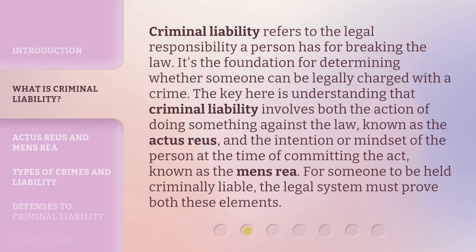Criminal liability refers to the legal responsibility a person has for breaking the law. It's the foundation for determining whether someone can be legally charged with a crime. The key here is understanding that criminal liability involves both the action of doing something against the law, known as the actus reus, and the intention or mindset of the person at the time of committing the act, known as the mens rea. For someone to be held criminally liable, the legal system must prove both these elements.